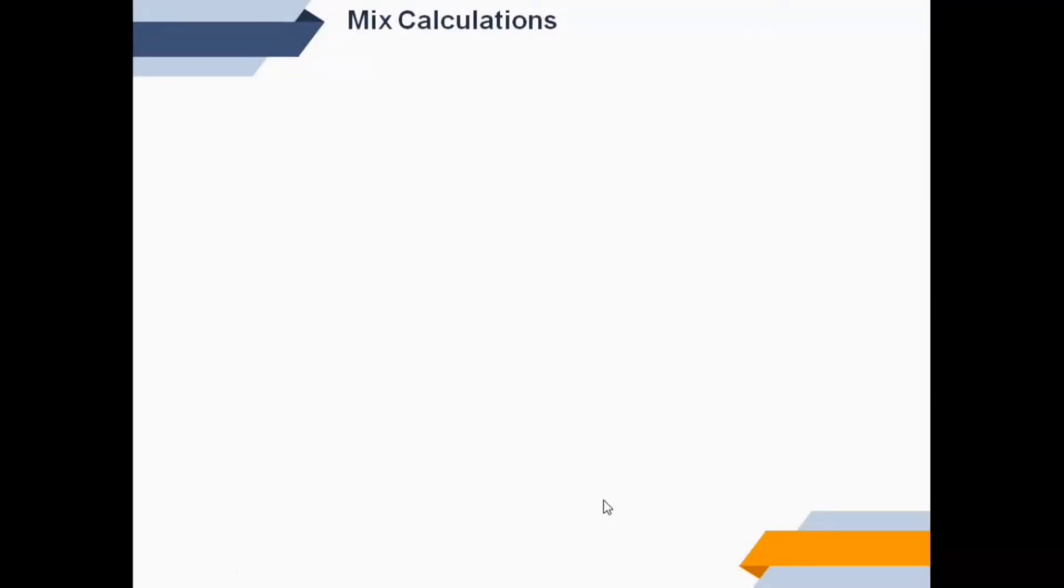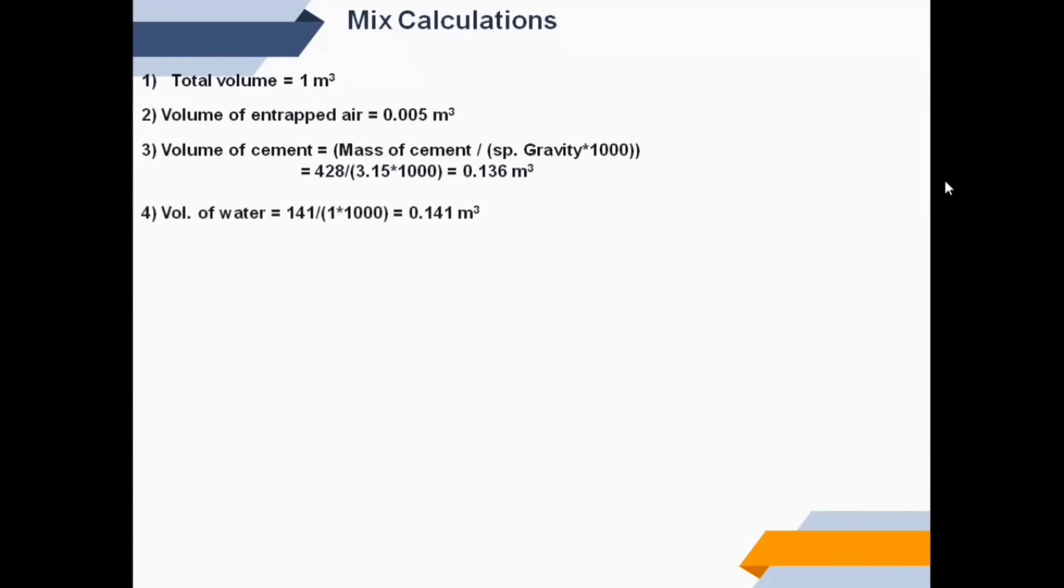Final step is mix calculations. Total volume assumed is 1 cubic meter. Volume of entrapped air from step 2 is 0.005 cubic meter. Volume of cement is calculated using the formula: mass of cement divided by specific gravity multiplied by 1000. After calculating, volume of cement equals 0.136 cubic meter. Volume of water is 0.141 cubic meter.